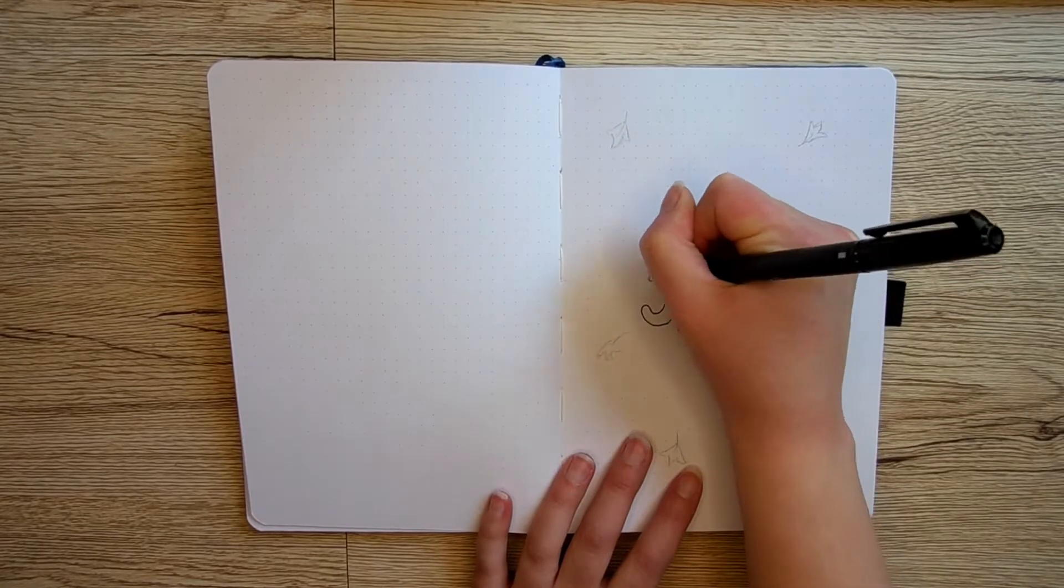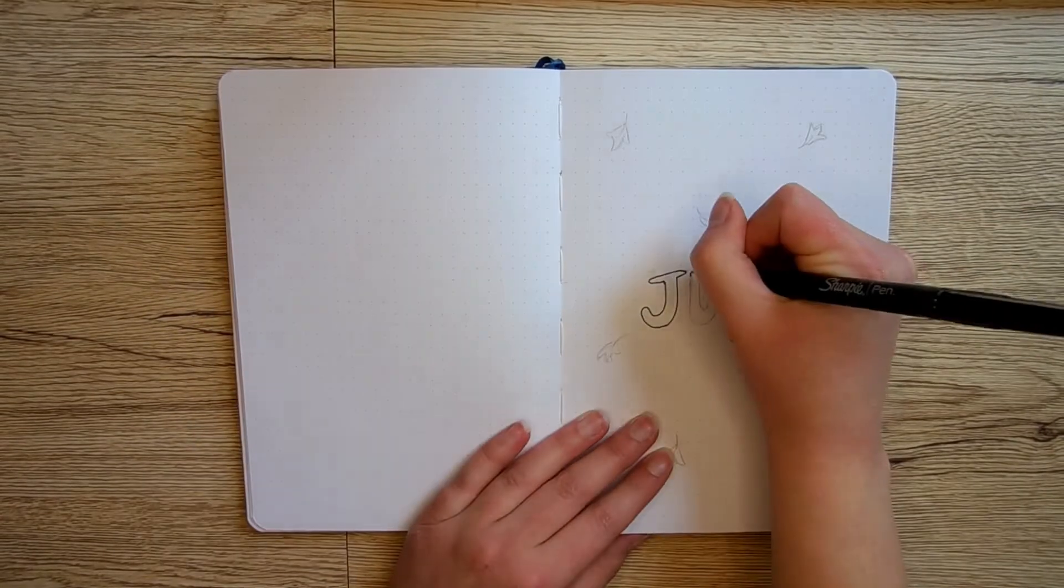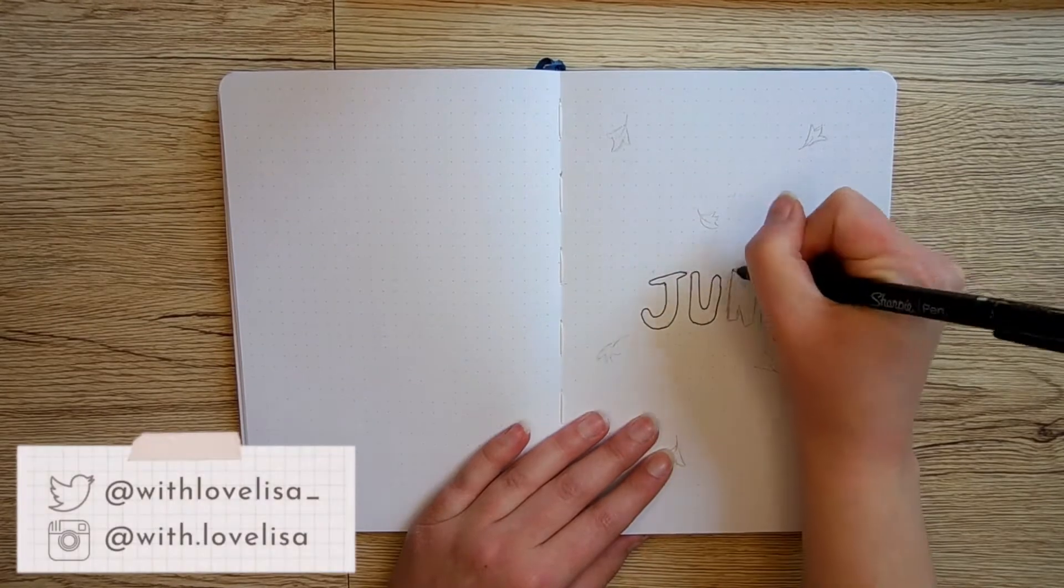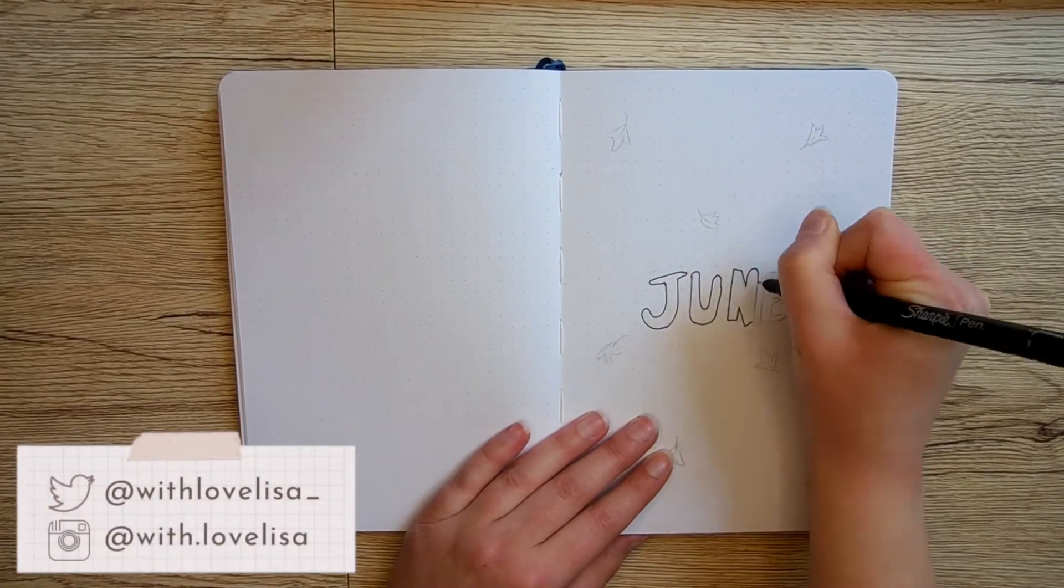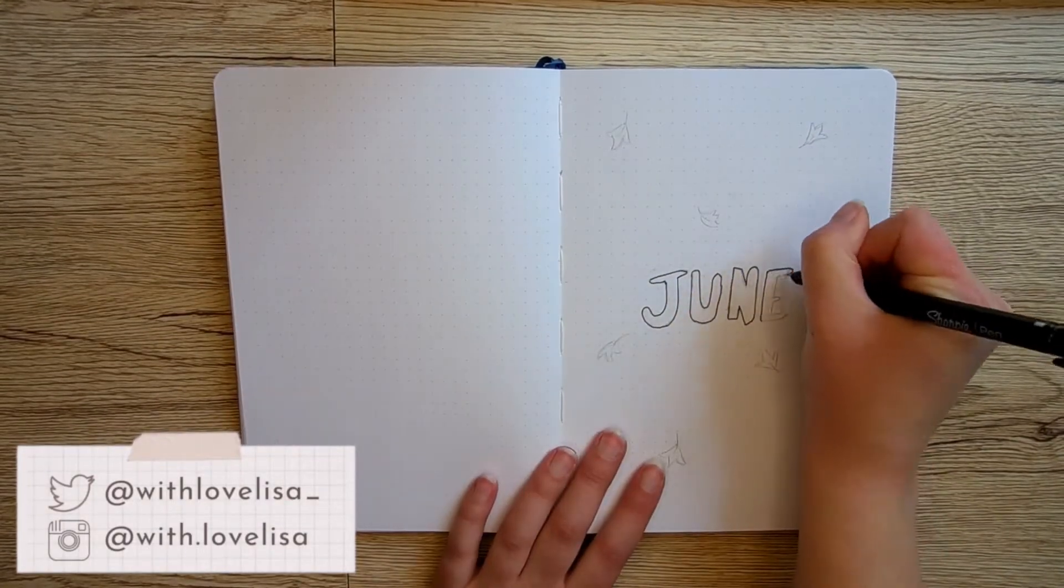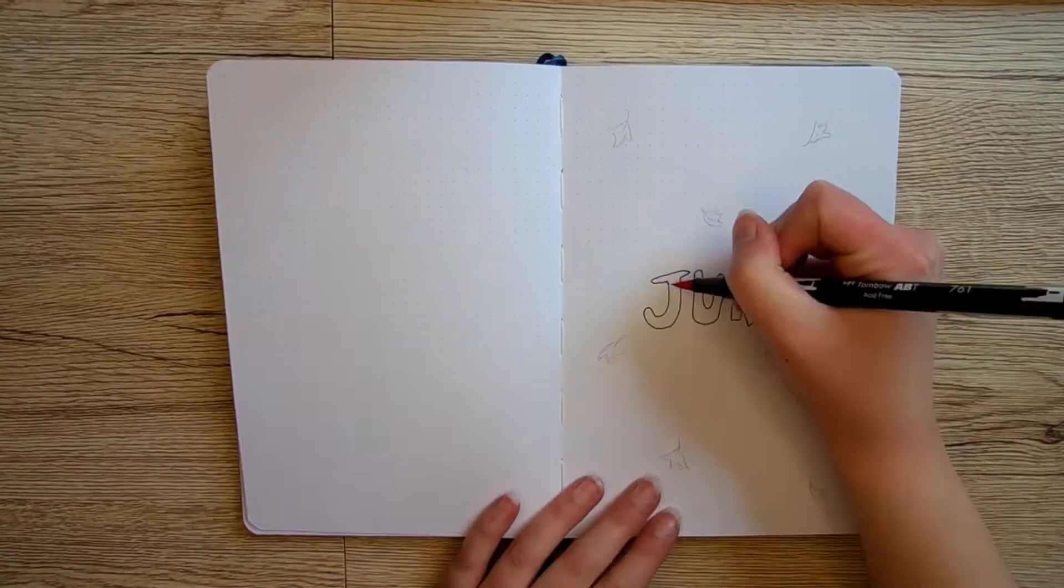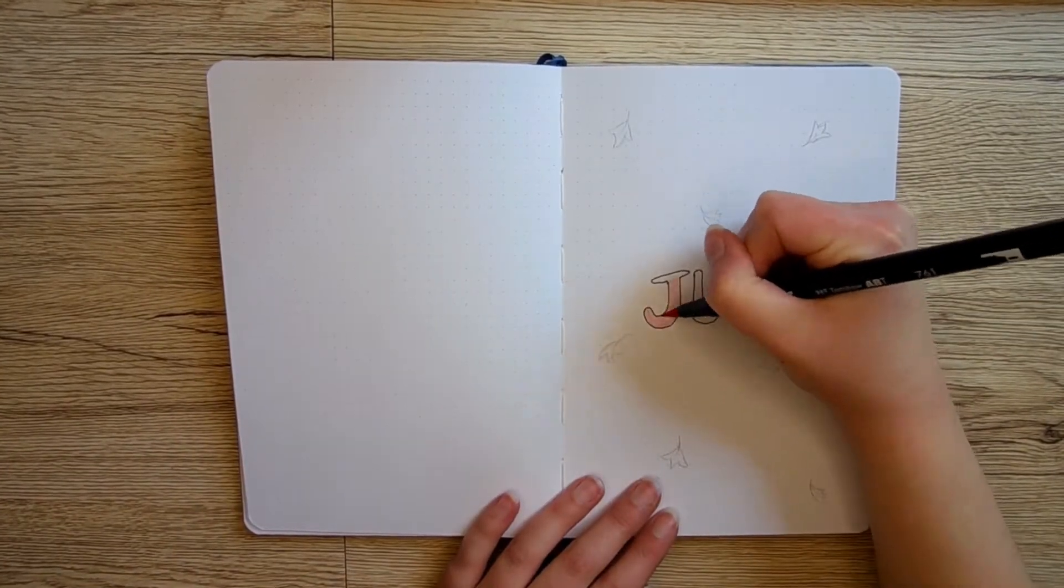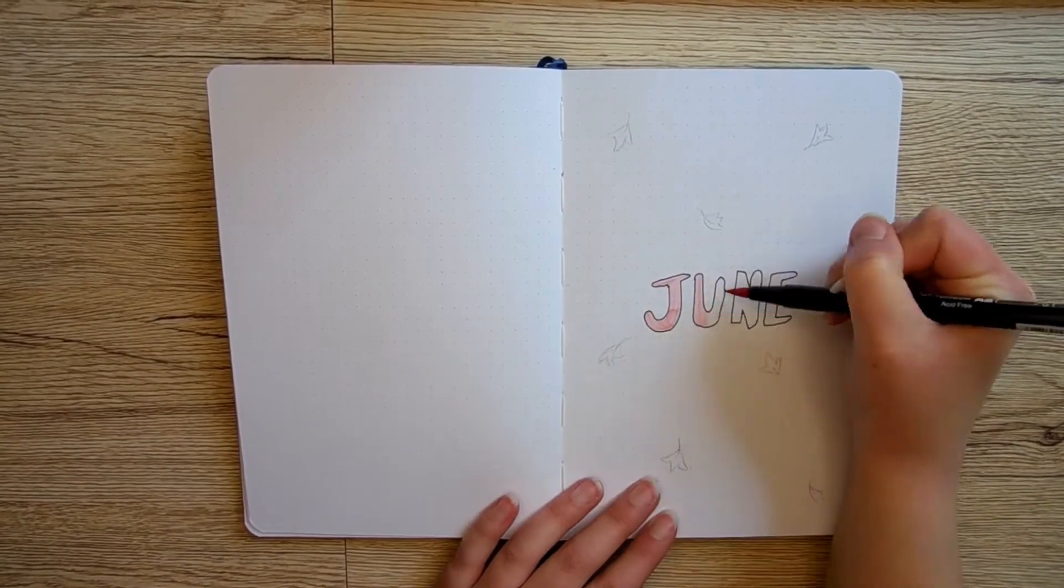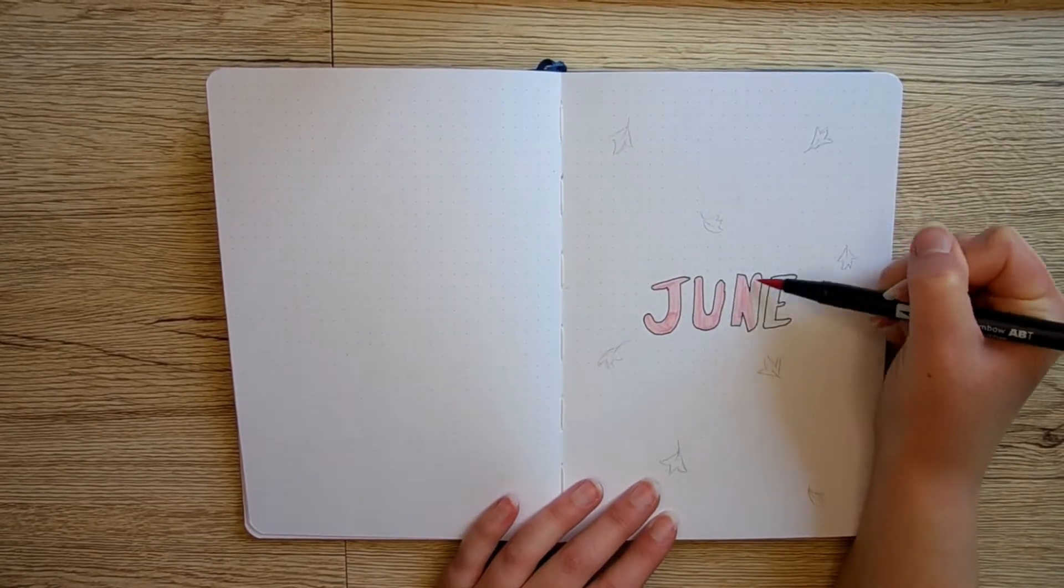Hello my friends, it's Lisa and welcome to my bullet journal setup for June. I'm really excited for my spreads this month because I'm doing a Heartstopper theme. I originally was going to do something completely different but I just wasn't loving the way it was coming out.